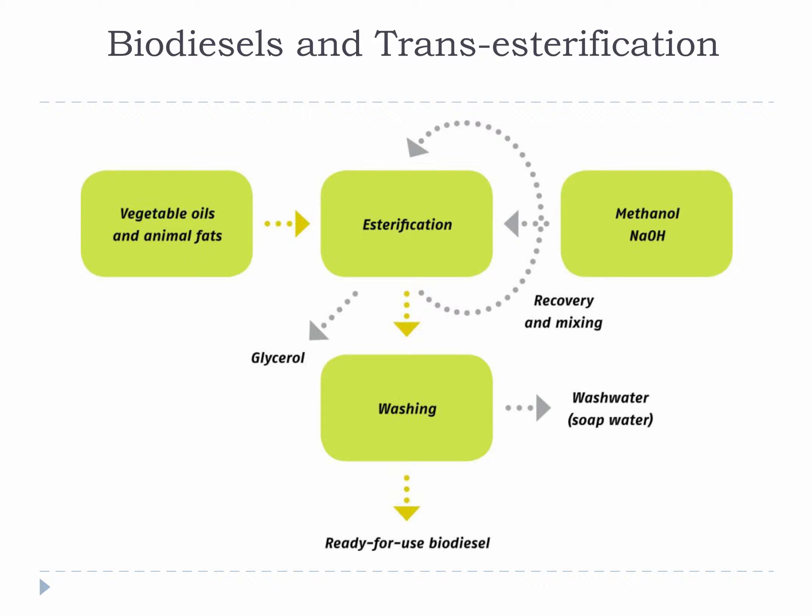Basically, you get some vegetable oil or animal grease. It is important that you start with a liquid and not a solid. Then you mix methanol and caustic with the vegetable oil and a transesterification occurs. When this happens, a methanol is added to the acid end of the fatty acid, which creates something called fatty acid methyl ester, or FAME, and a waste product called glycerol. The FAME is cleaned up and used as biodiesel, and the glycerol is resold as another product or discarded as waste.